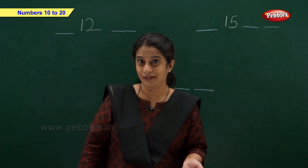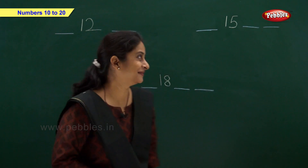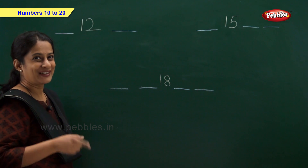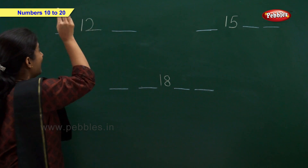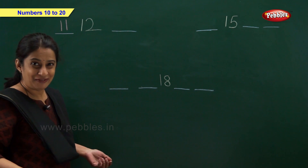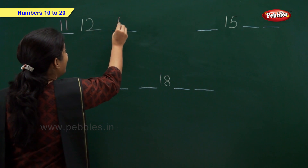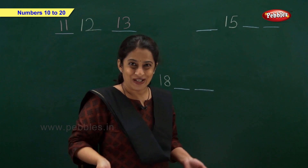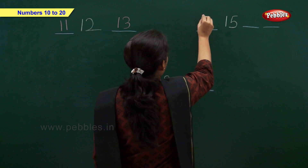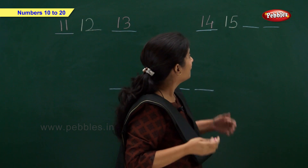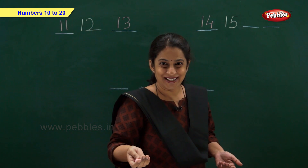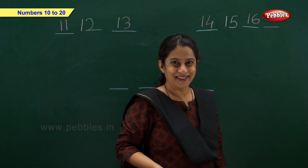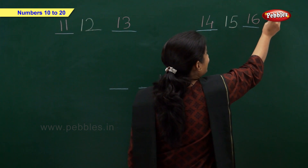Before and after — let us solve these examples. We have number 12: which number comes before 12? Number 11. And which number comes after 12? Write number 13. Here we have number 15: which number comes before 15? Write number 14. And which number comes after 15? Come on, tell me fast — write number 16.